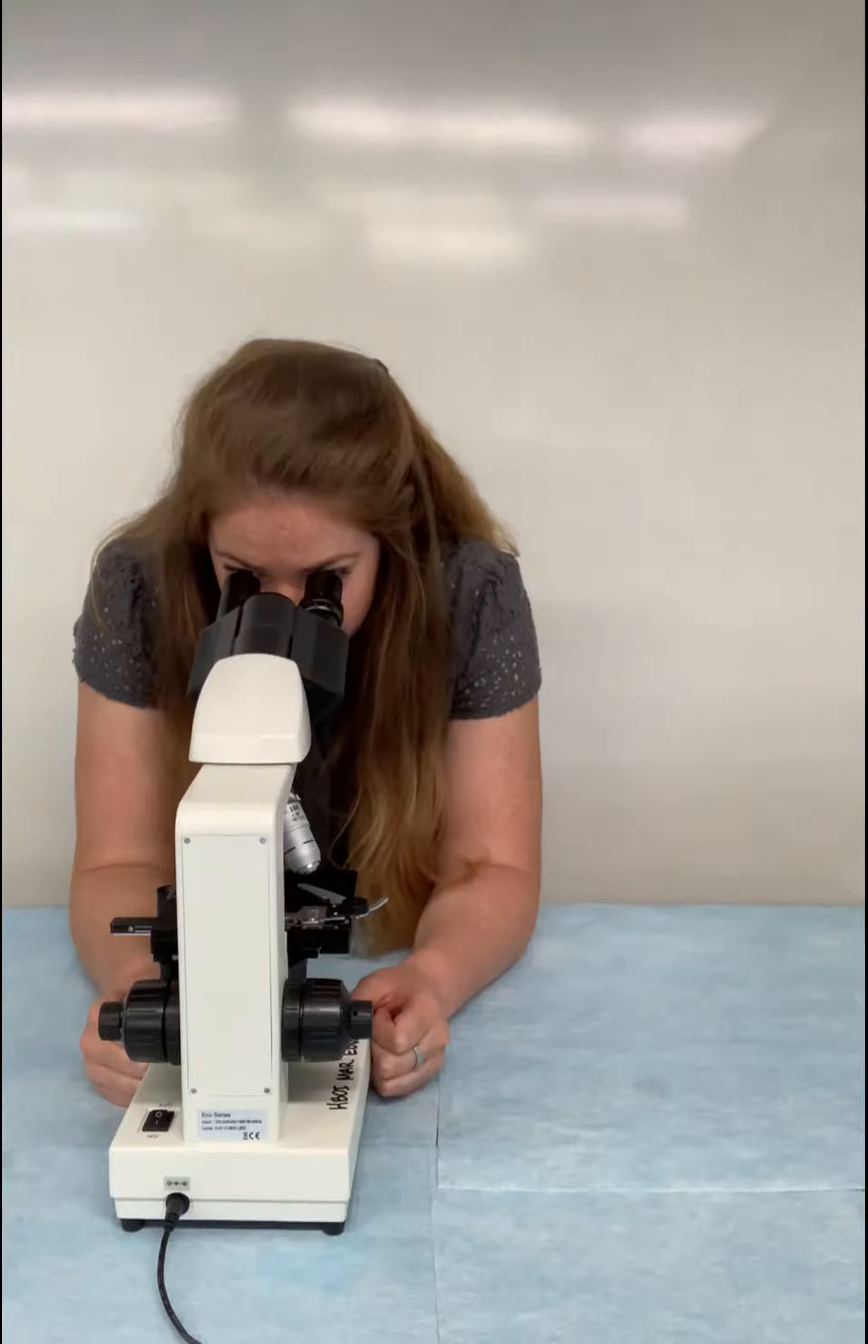Now the first thing you want to do is make sure your microscope is positioned on the table in a way that's comfortable to you. For me I like to rest my forearms on the table like this and peer into the microscope. So this is a perfect position for me. But depending on your height and stature you may want to move the microscope closer or further away so it's comfortable.